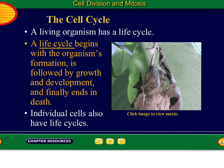A living organism has a life cycle. So this is actually B, number one. A life cycle begins with the organism's formation and is followed by growth and development, and finally ends in death. So for number one, put 'life cycle' at the end of that sentence. It says cells have periods of formation, growth and development, and death — called 'life cycle.'